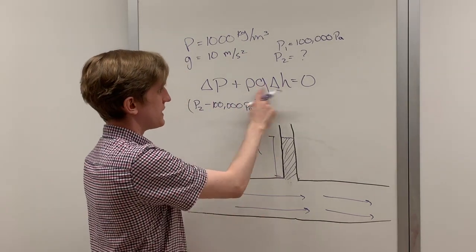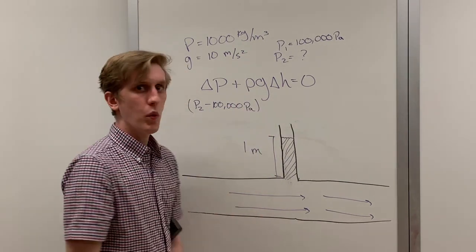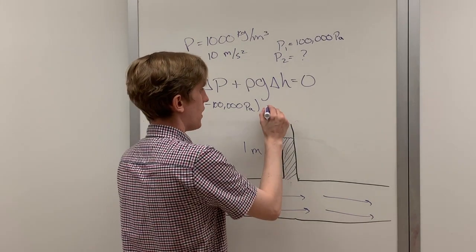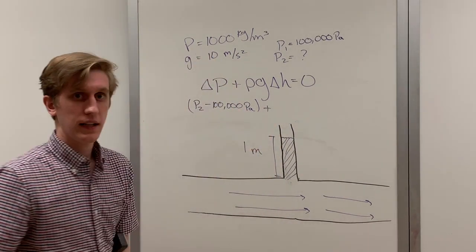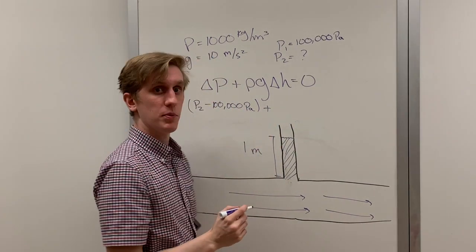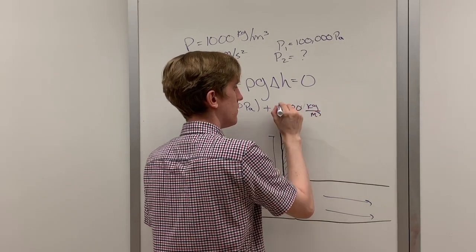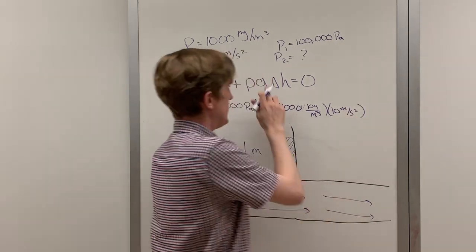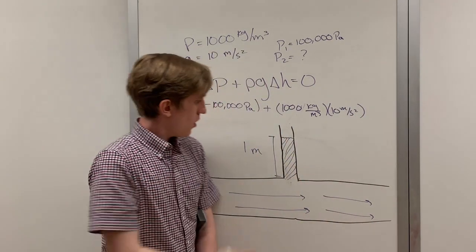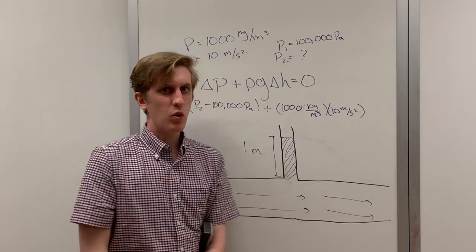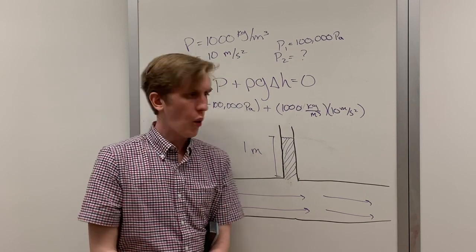Next, we need to consider this term. We already know what rho and G are. What about delta H? Well, we know that it's 1, but the question is, is it positive 1 or is it negative 1?